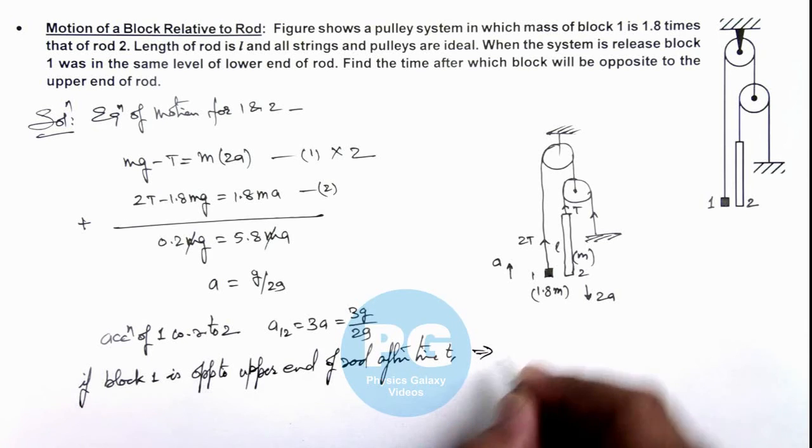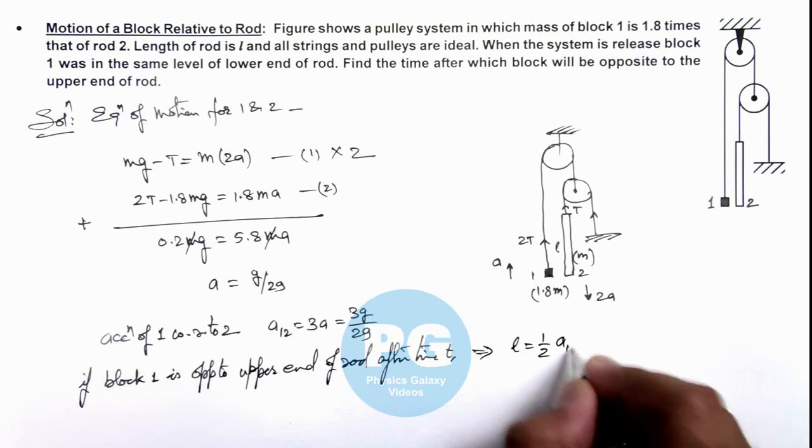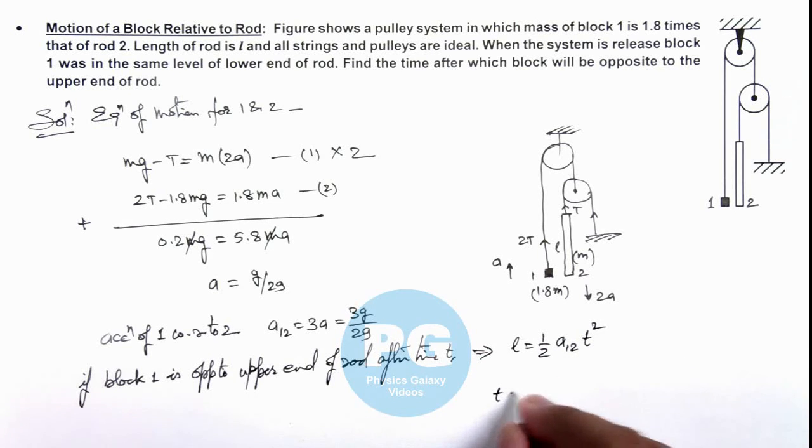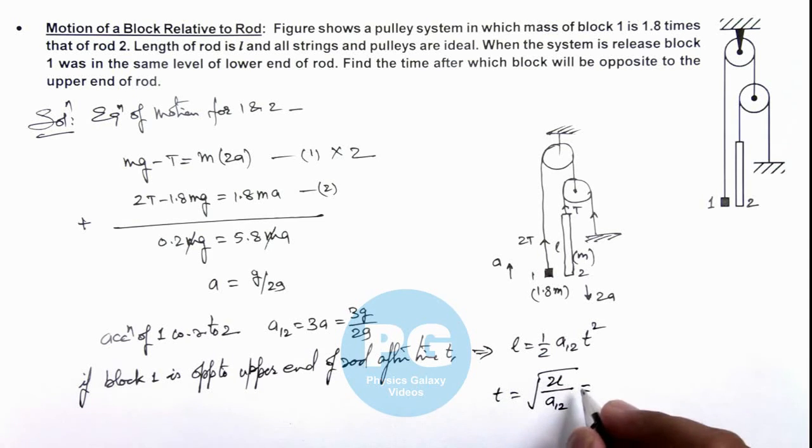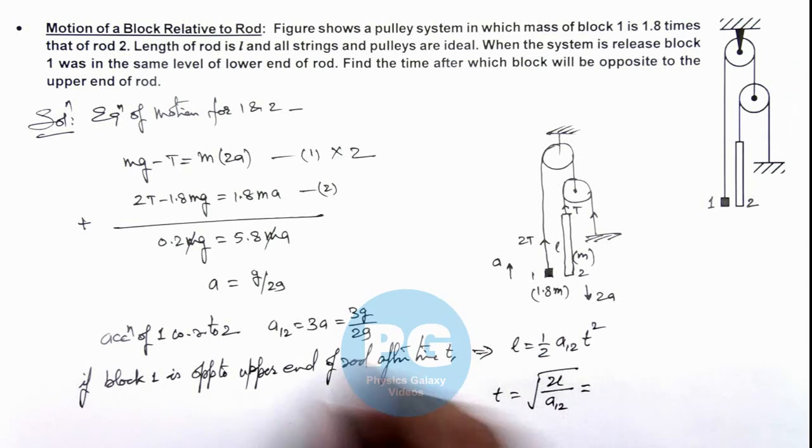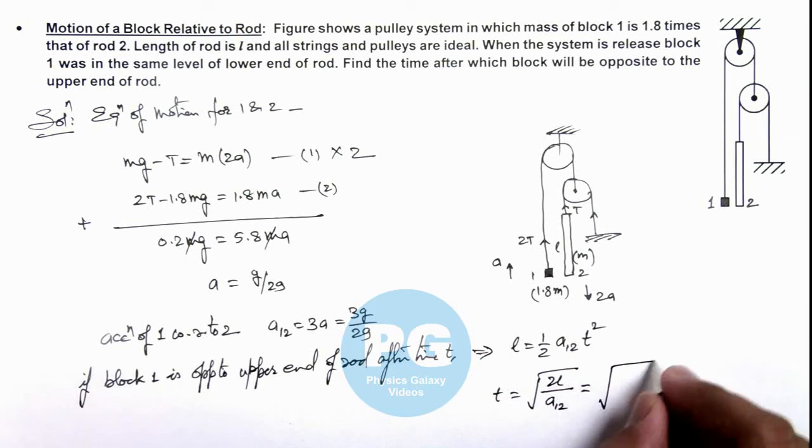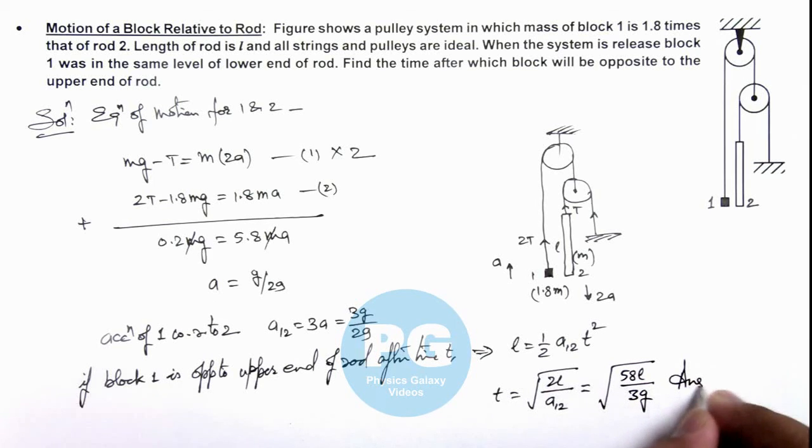This implies we can use l = (1/2) × a₁₂ × t². So this will give us the time as √(2l/a₁₂). If we substitute the value, a of 1 with respect to 2 is 3g/29, so on substituting we are getting it as √(58l/3g). That will be the final result of this problem.